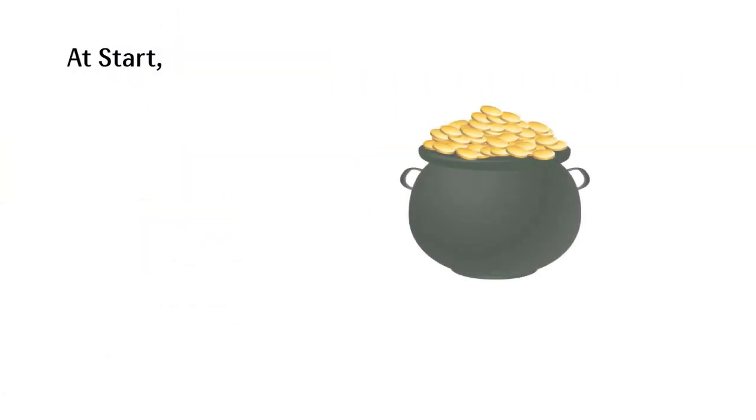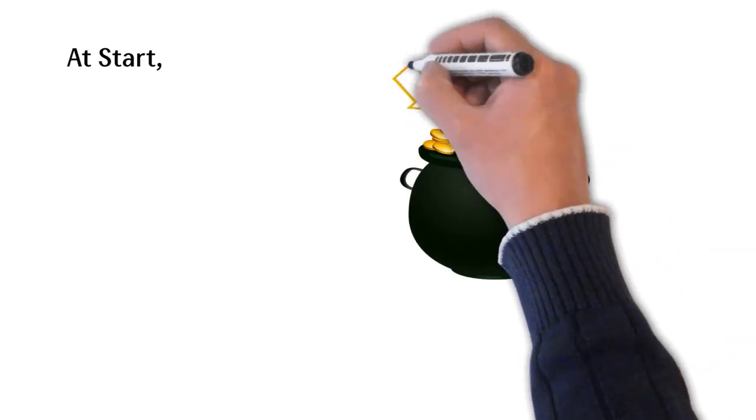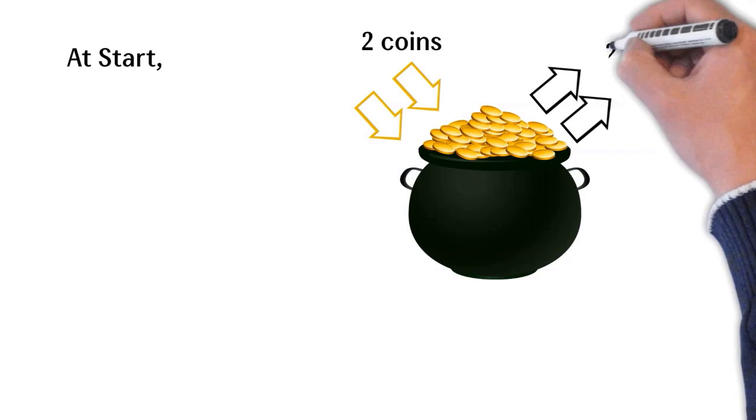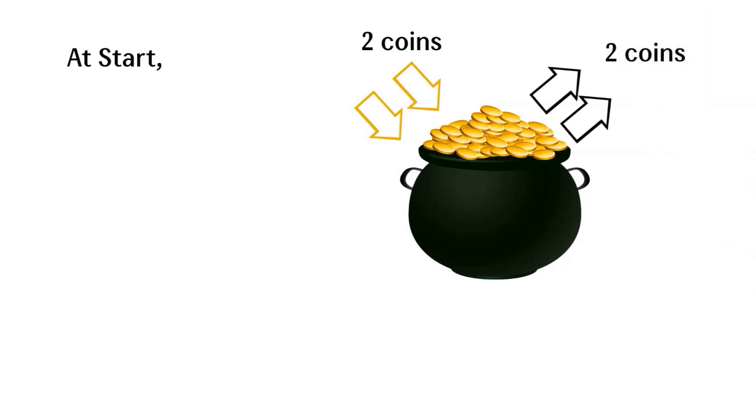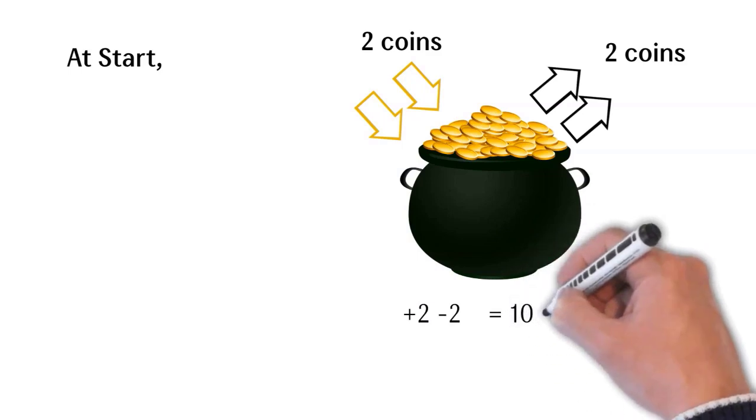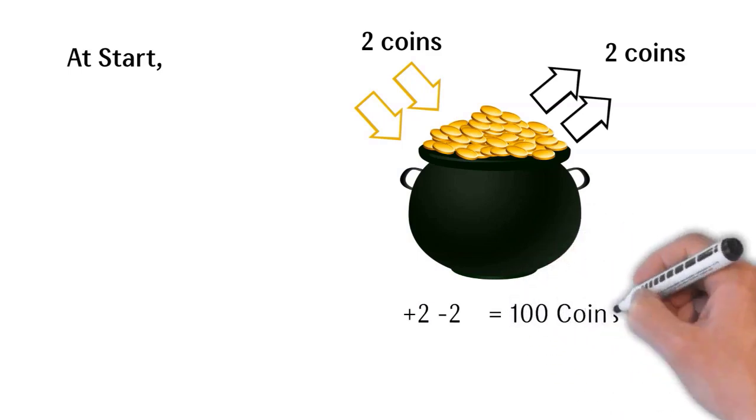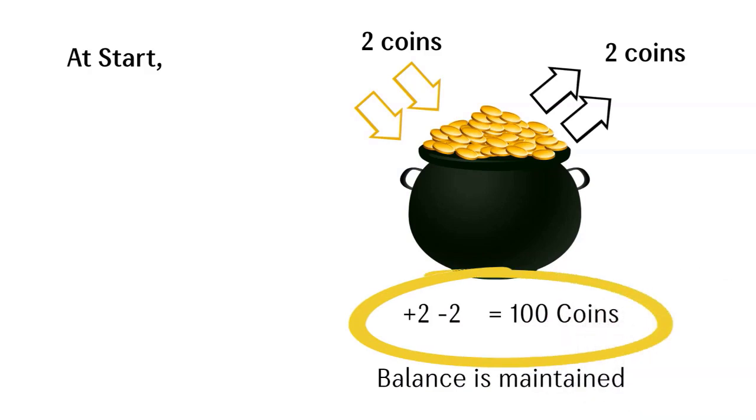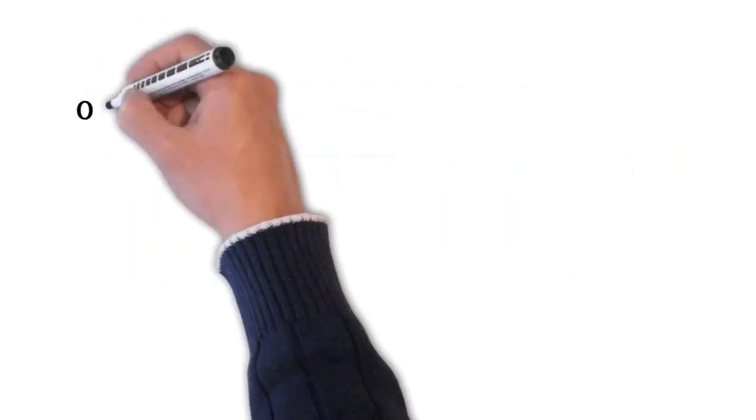At start, that person uses only one coin as his needs are very limited. But after that his needs increase and he begins to take two coins. Up to this two coins level, the pot remains full as two coins are deposited and two coins are expended every day, and so the balance is maintained.